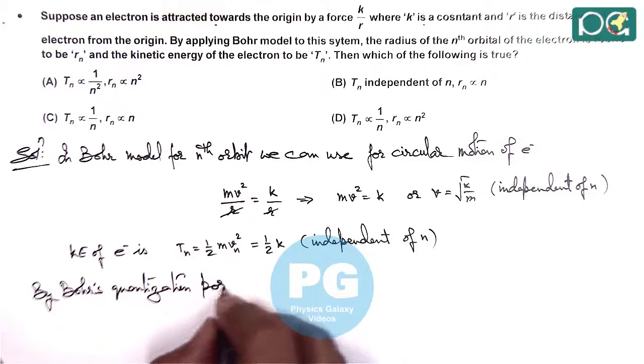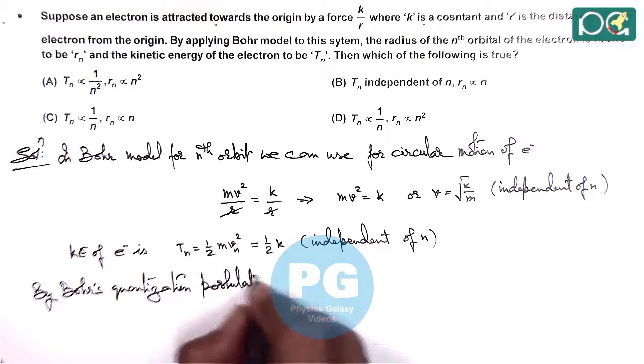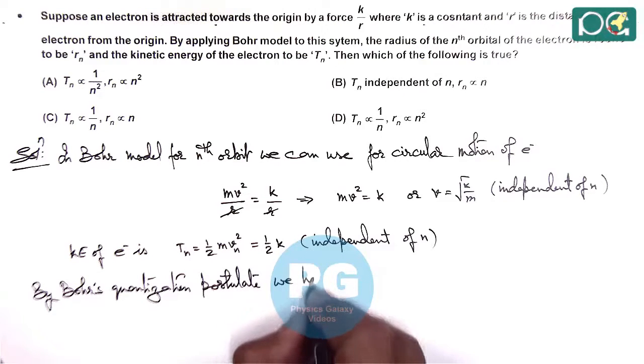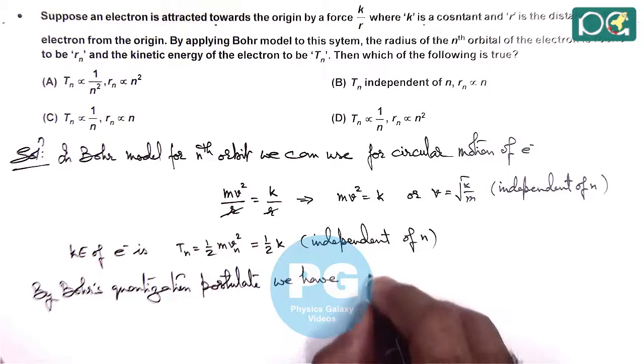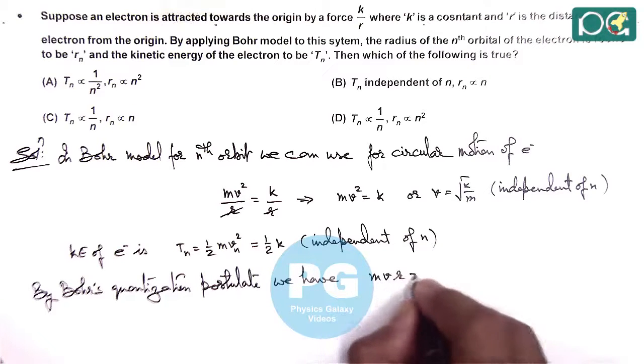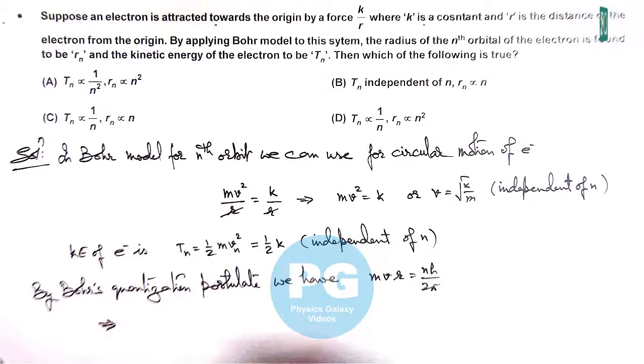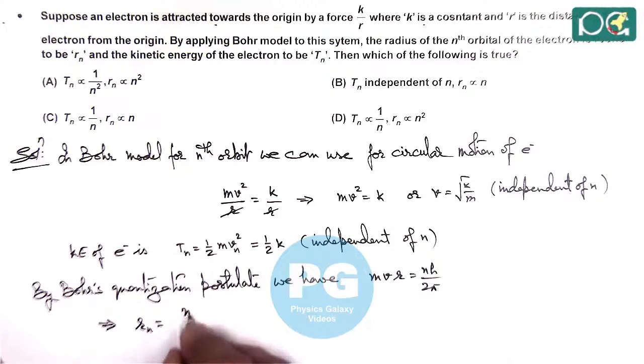We have, in this case, mvr is equal to nh/2π, which gives us the radius in the nth orbit is nh/2πmv.